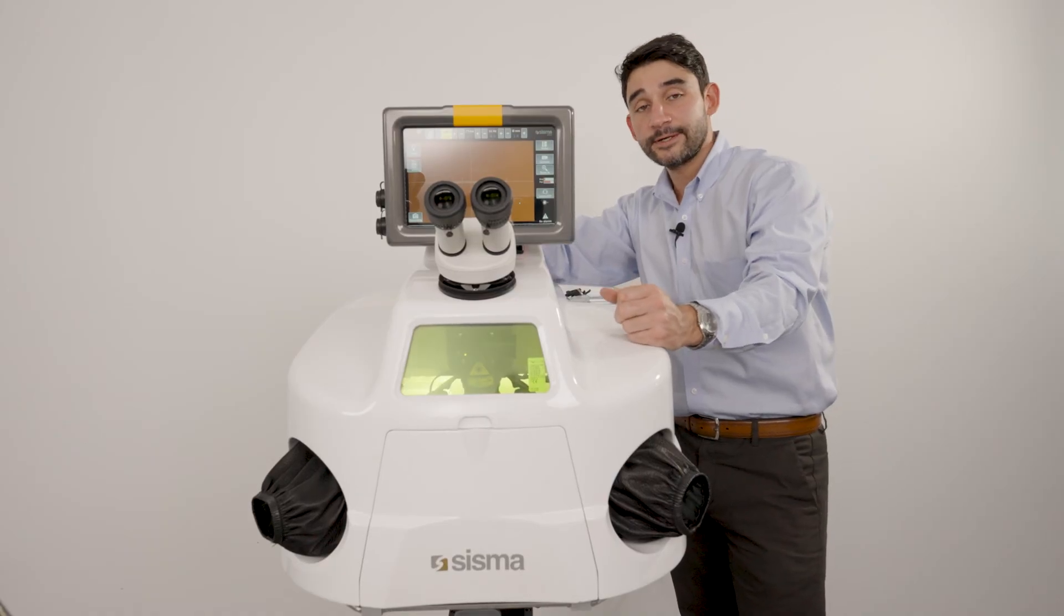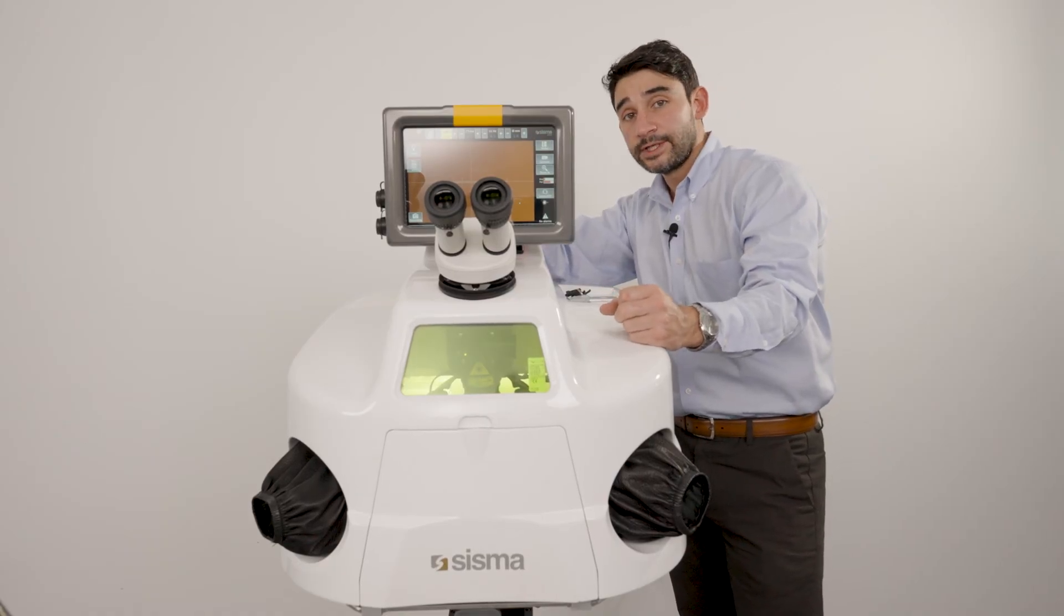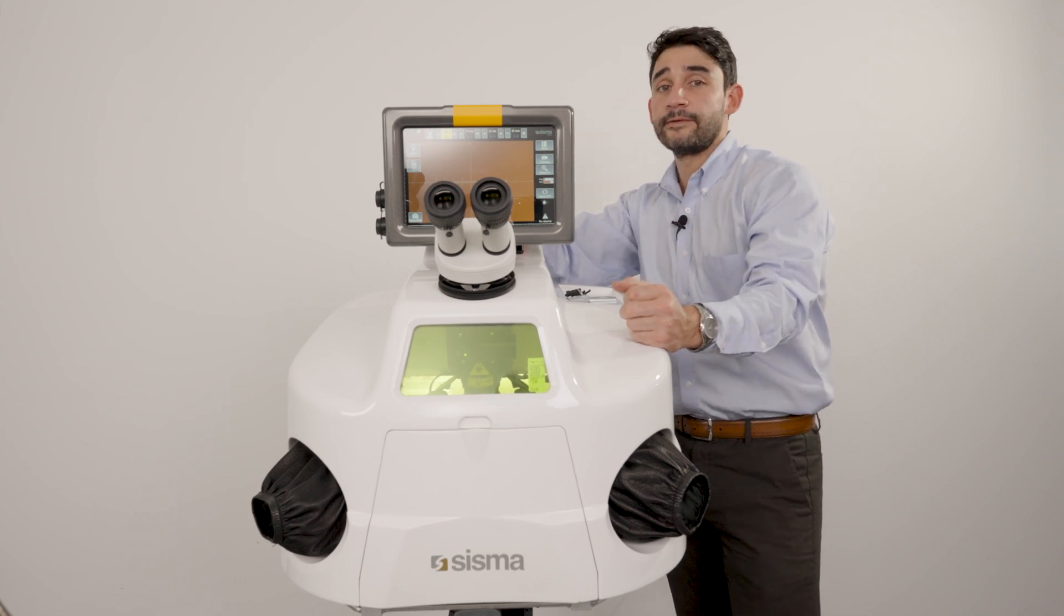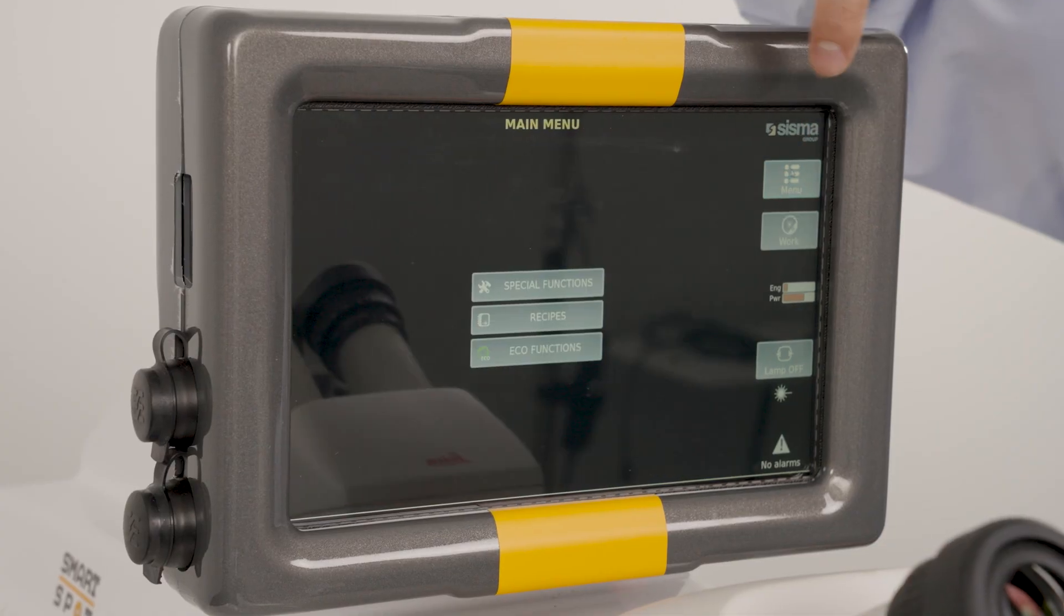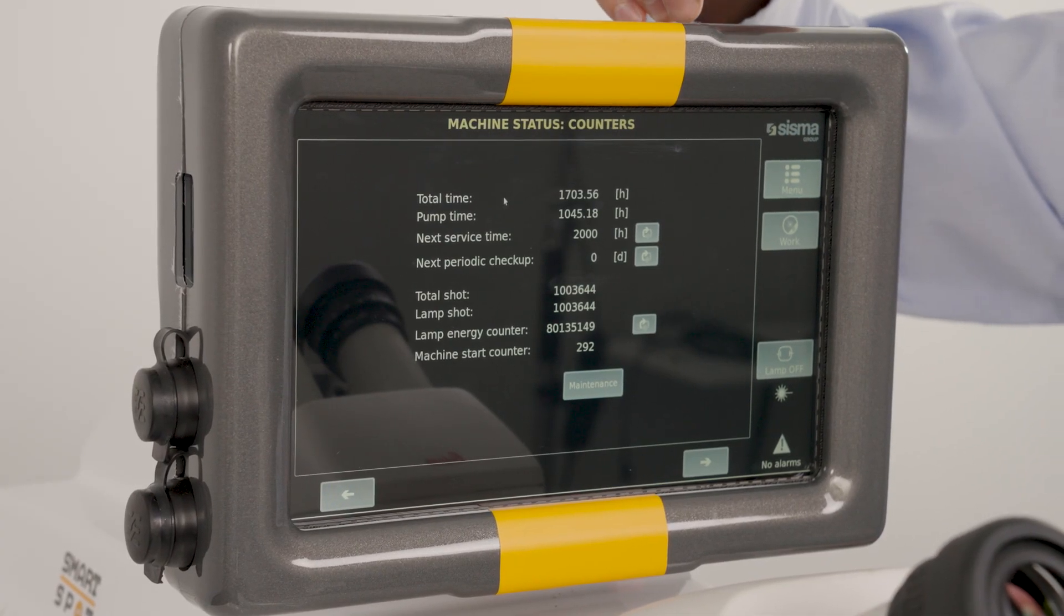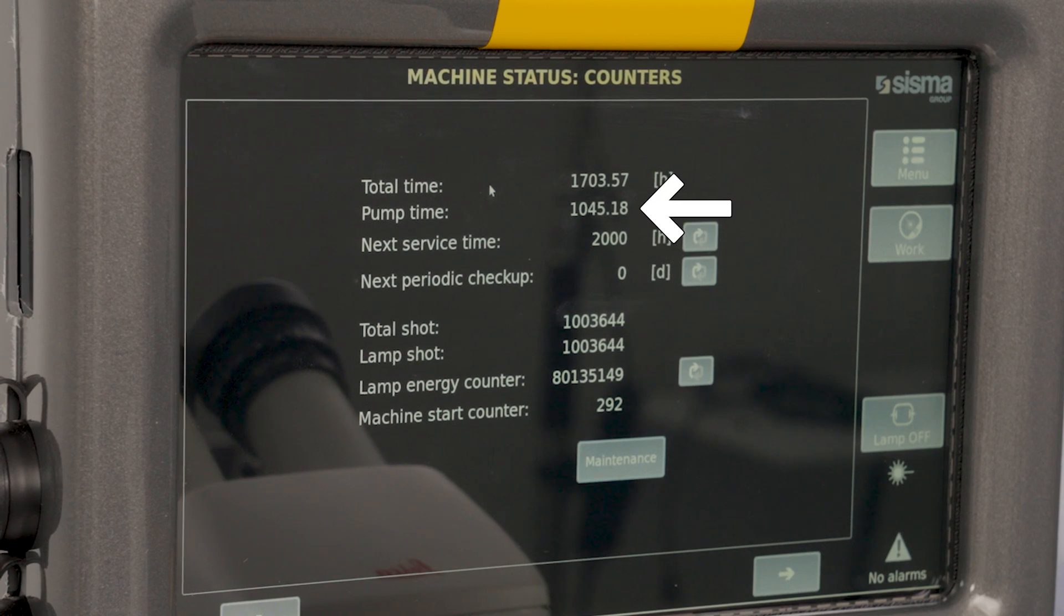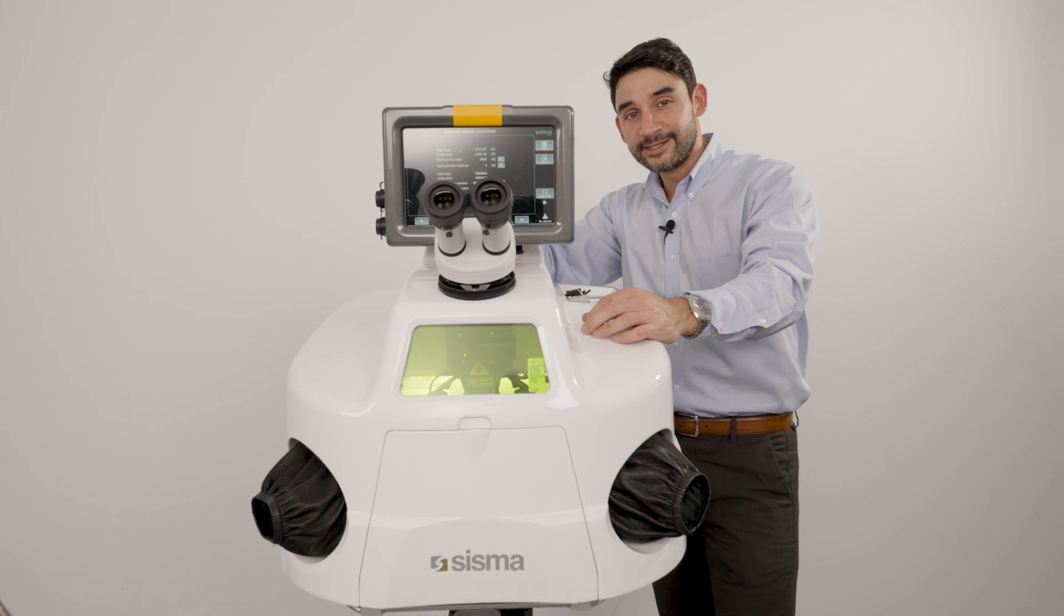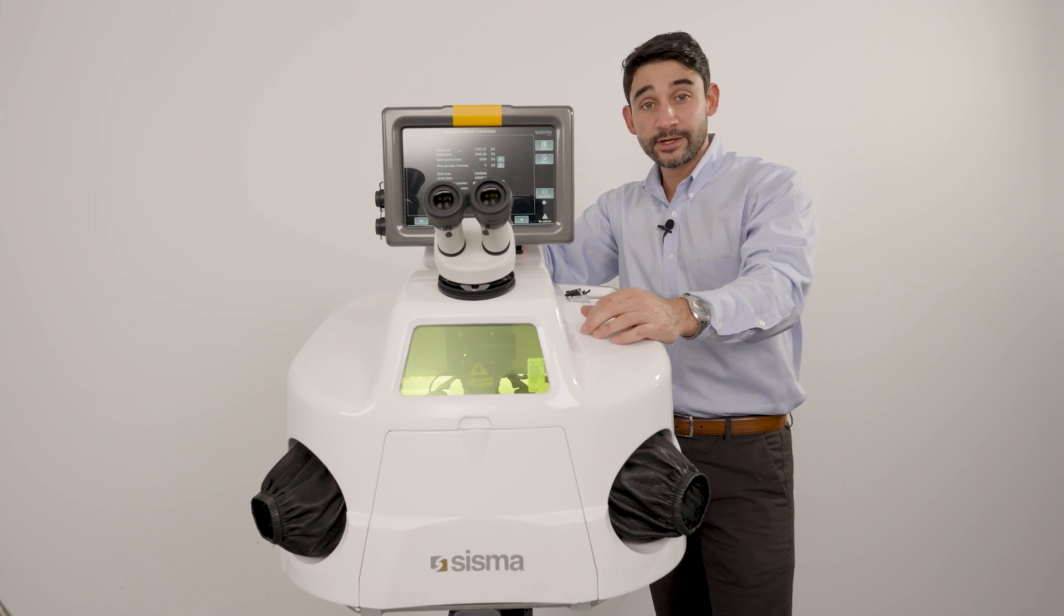Okay we're ready to work. We can check our machine counters to check the status of the water pump for one final verification. Menu, special functions, machine status. So the next service time is about a thousand hours ahead of the current pump time. Now we've completed the water maintenance procedure and you can continue working with your laser machine.